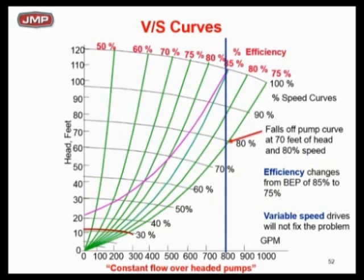What happens if you've over-headed the pump? This is critical — we're seeing major engineering firms make this mistake. You cannot fix an over-headed pump with a variable speed drive and get full flow. The head was specified at 110 feet, 800 GPM, but what if my actual pump head required is only 70 feet? You've over-headed it significantly. If the requirement is only 70 feet and you need that much flow, look at the blue line.